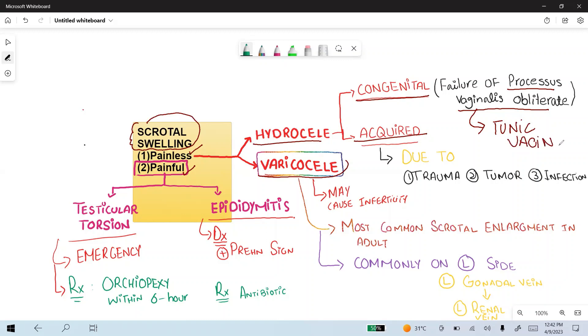If this processus vaginalis obliteration doesn't happen, it will lead to communication between the processus vaginalis and the peritoneum, causing communicating hydrocele. Acquired hydrocele has multiple causes due to trauma, tumor, and infection.